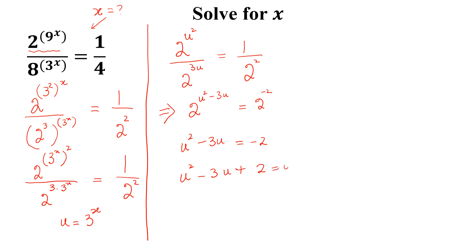And we can write this as u^2 - 3u + 2 equal to 0. Taking u common,